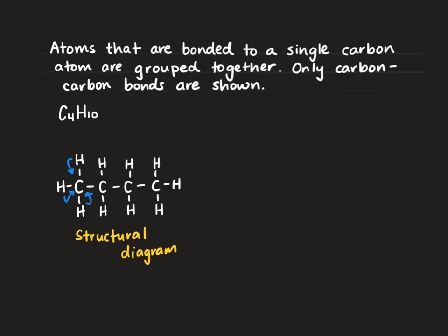Our first carbon has three hydrogens and we're going to write that as CH3. There's a single bond to our second carbon, so we're going to write CH2 because that second carbon has two hydrogens. Our third carbon has two hydrogens and our fourth has three. So here we have our condensed structural diagram.